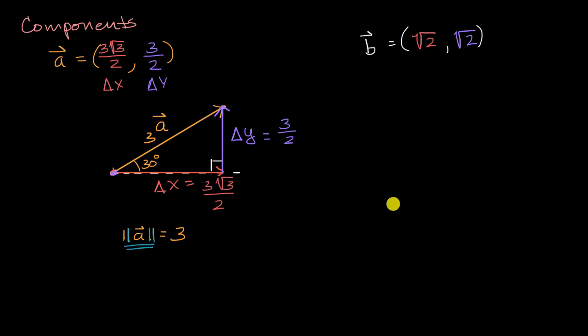So it would, if this is its tail and its X component, which is its change in X is square root of two. So it might look something like this. So that would be change in X is equal to square root of two.